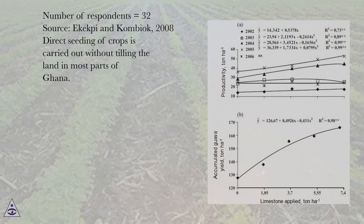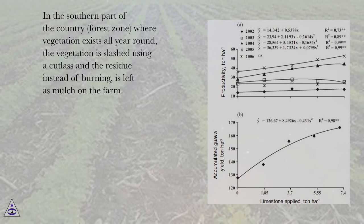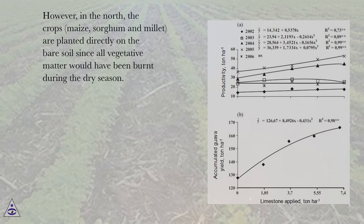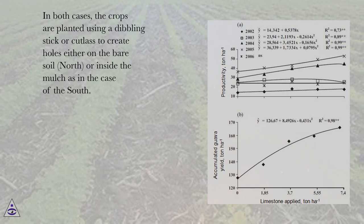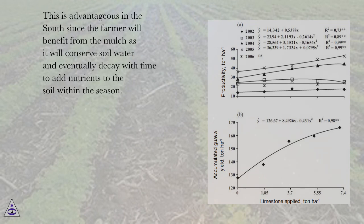Direct seeding of crops is carried out without tilling the land in most parts of Ghana. In the southern forest zone, where vegetation exists all year round, the vegetation is slashed using a cutlass and the residue, instead of burning, is left as mulch on the farm. However, in the north, crops such as maize, sorghum and millet are planted directly on the bare soil since all vegetative matter would have been burnt during the dry season. In both cases, crops are planted using a dibbling stick or cutlass to create holes either on bare soil in the north, or inside the mulch in the south. This is advantageous in the south since the farmer will benefit from the mulch as it conserves soil water and eventually decays to add nutrients to the soil within the season.